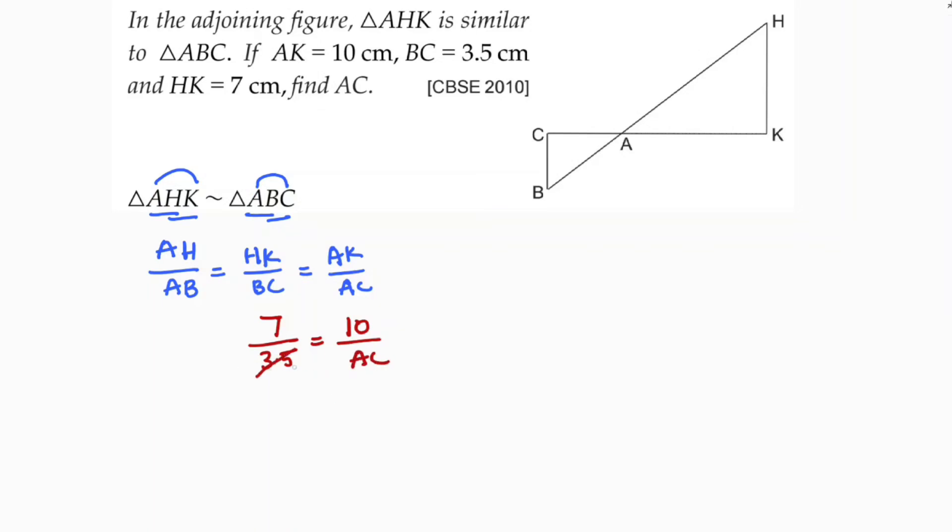If you want, you can cancel directly. 3.5 times 1, 3.5 times 2. If you cross multiply now, 2 AC equals 10, AC is 10 by 2, AC is 5. The length of AC is 5 cm.